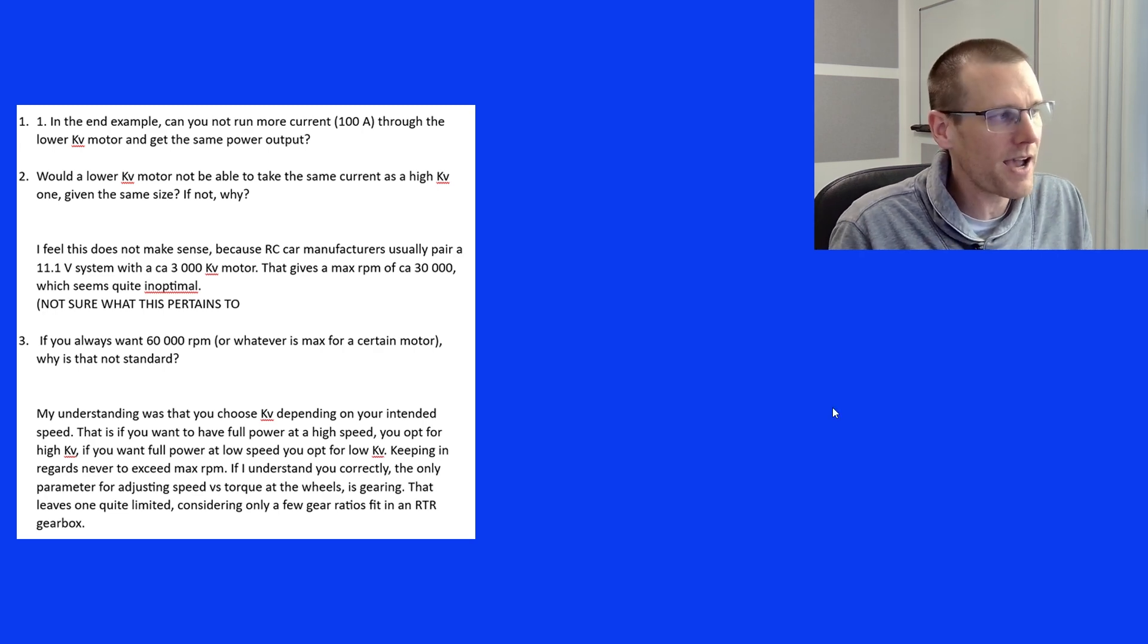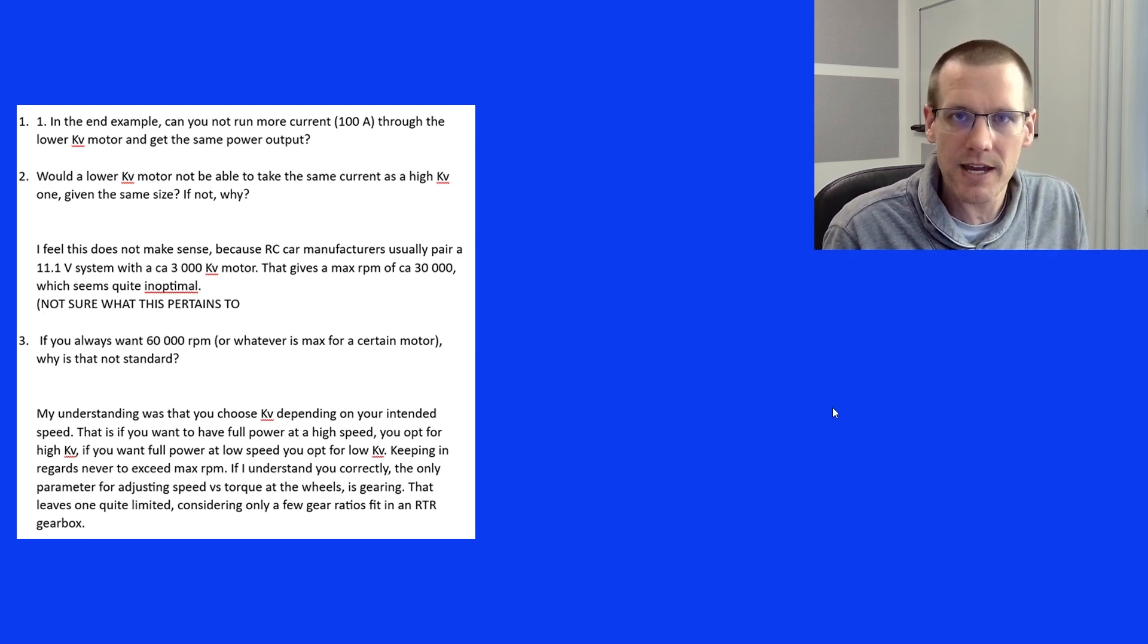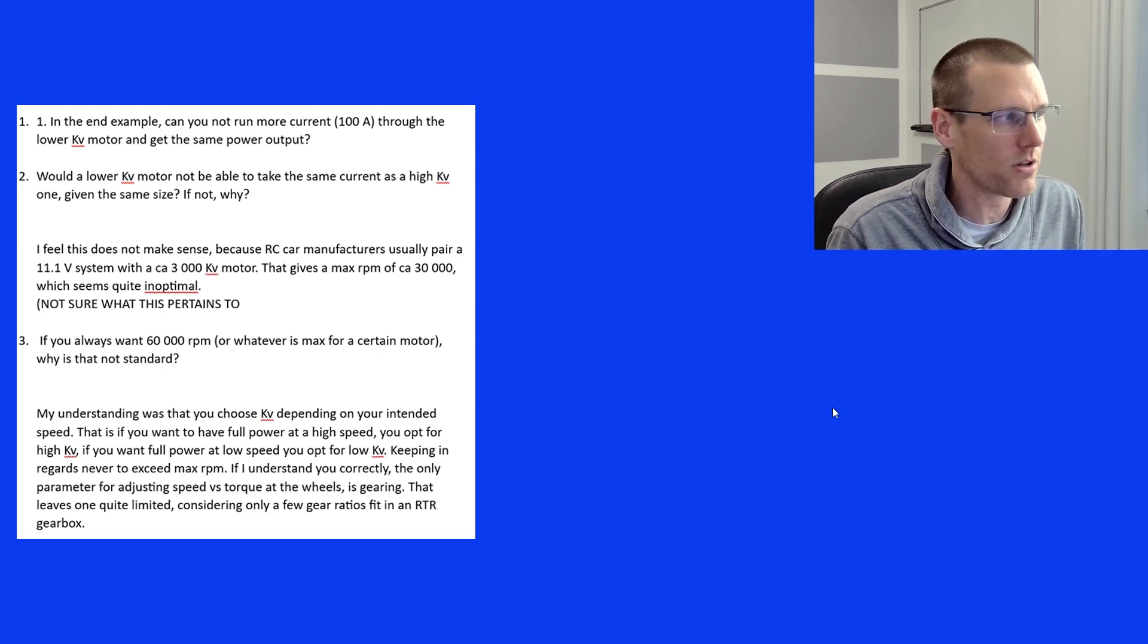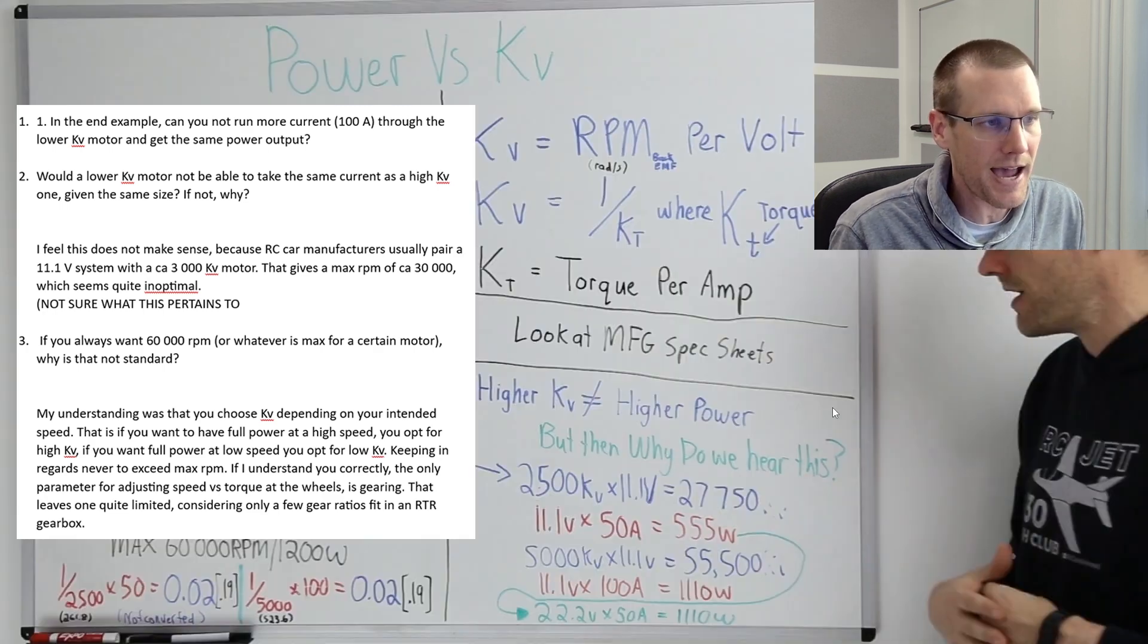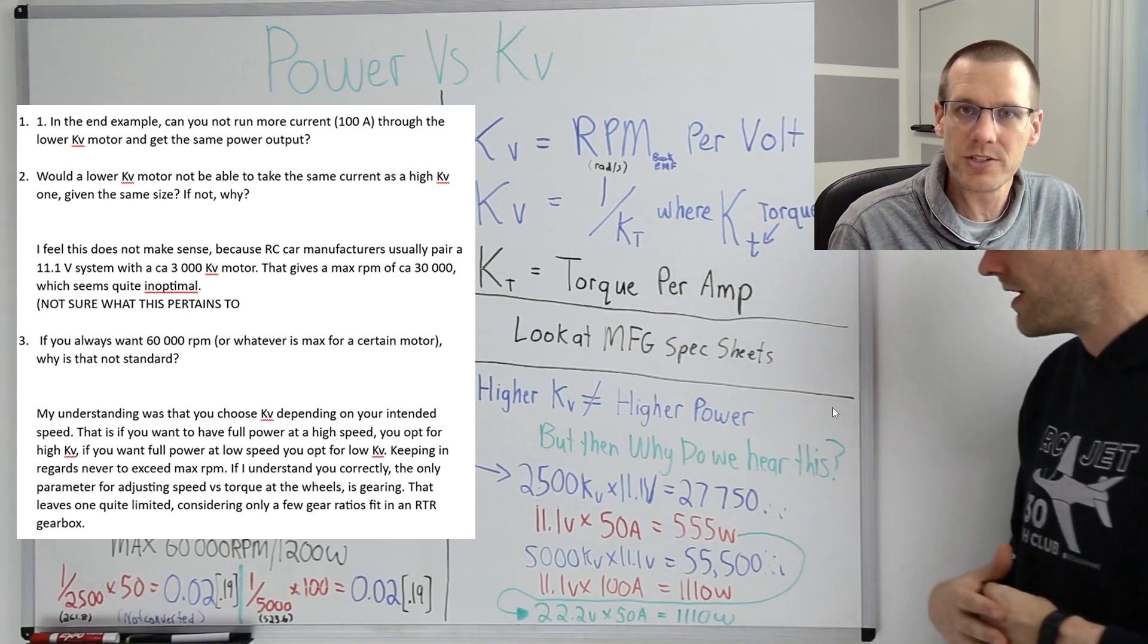So the first question that we have here is in the end example, and we'll get to that very shortly here. I've got a little slide that I can show you. Can you not run more current 100 amps through the lower KV motor and get the same power output? Now, this is a clip from the video. I've pasted that here so we can ultimately see what the example is referring to.